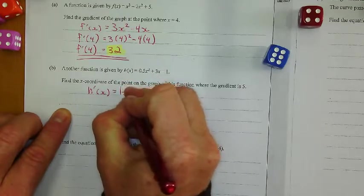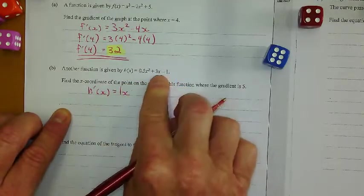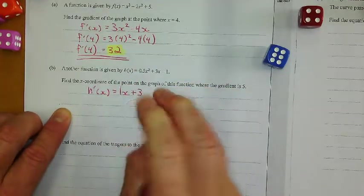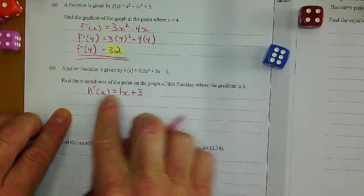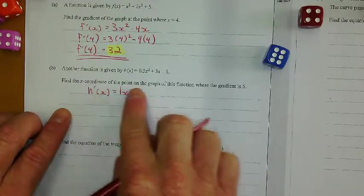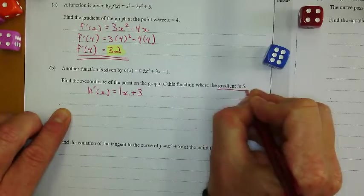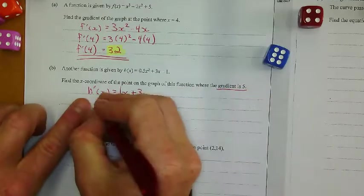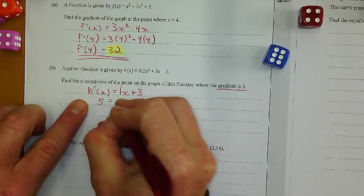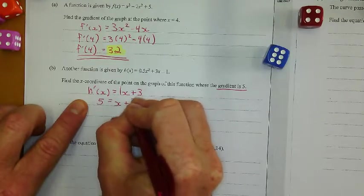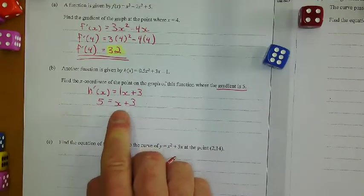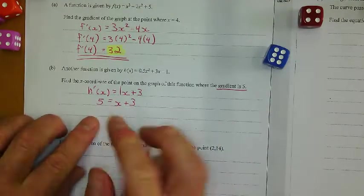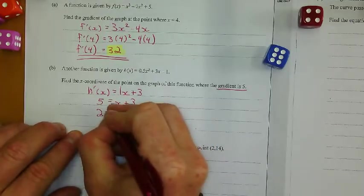So that's 1x. I don't really need that 1 there, but that's okay. Plus 3. And that's my derived equation. Now this says find the x-coordinate where the gradient is 5. So when the gradient is 5, that means that this is equal to 5. And that's a pretty easy problem for the second one on a calculus exam. So I'm going to get that x-coordinate is just 2.